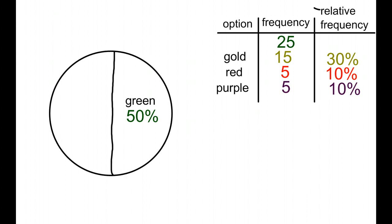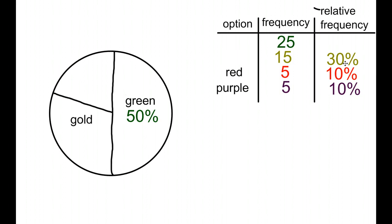Our next biggest slice is gold, at 30%. So 30% is going to be a little bit bigger than a quarter, so we'll draw that in roughly around here. Then we'll go ahead and drag in our label and our percentage.